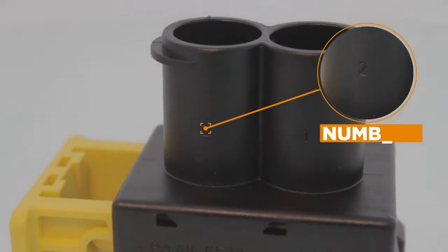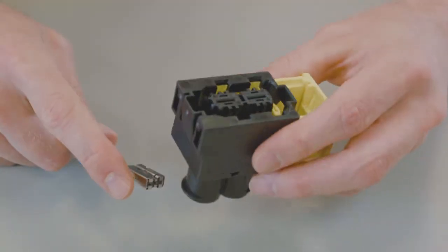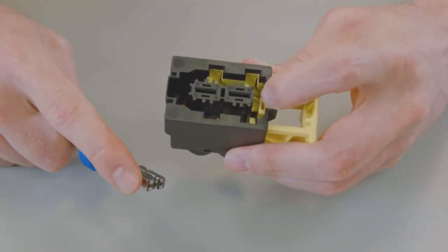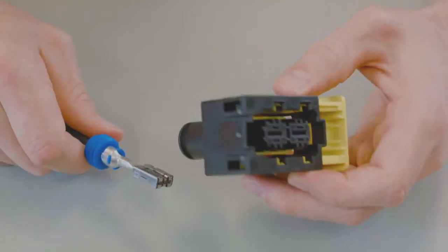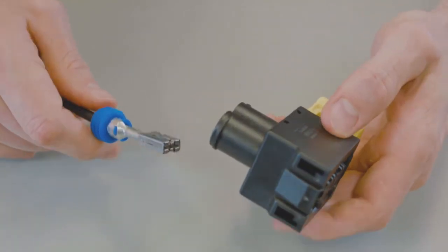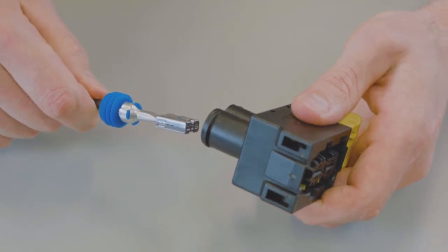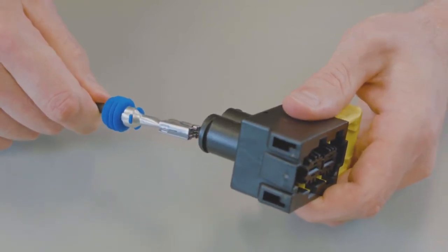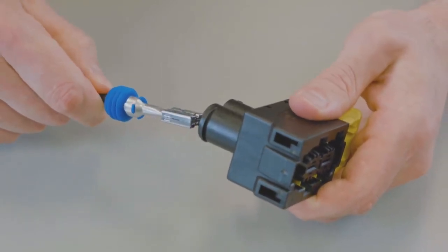Cavities are marked with numbers. Check that the integrated secondary lock is in the unlocked position. Grasp the crimp contact approximately one inch behind the contact. Hold the connector with the rear facing you. Make sure the contact is in the correct orientation.